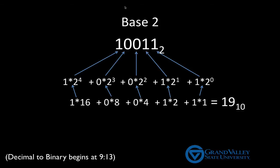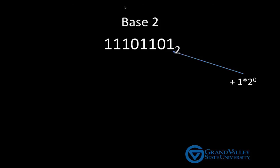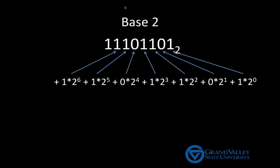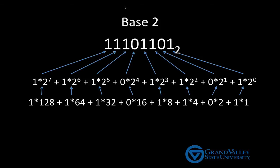Got it? Just to be sure, we're going to do this one more time very quickly. Again, right to left, 1 times 2 to the 0 plus 0 times 2 to the 1st plus 1 times 2 squared plus 1 times 2 cubed plus 0 times 2 to the 4th plus 1 times 2 to the 5th plus 1 times 2 to the 6th plus 1 times 2 to the 7th. Expand out the powers of 2, and we have 1 times 1 plus 0 times 2 plus 1 times 4 plus 1 times 8 plus 0 times 16 plus 1 times 32 plus 1 times 64 plus 1 times 128, which when added all up gives us 237 base 10.